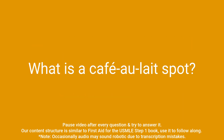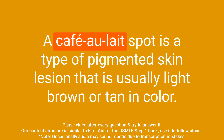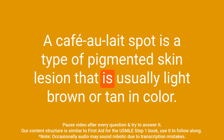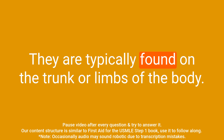Question: What is a café-au-lait spot? Answer: A café-au-lait spot is a type of pigmented skin lesion that is usually light brown or tan in color. They are typically found on the trunk or limbs of the body.